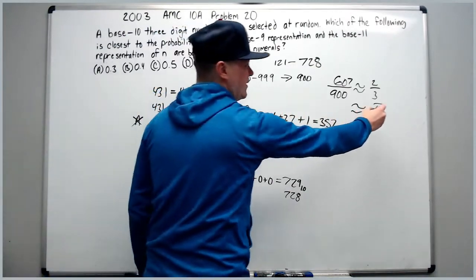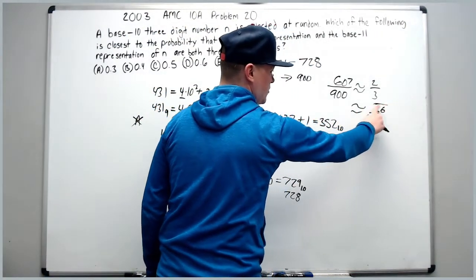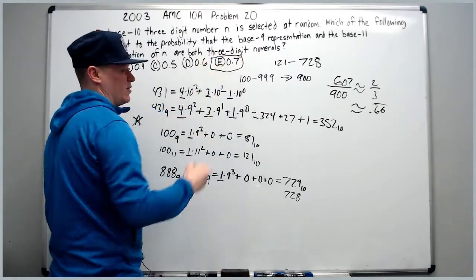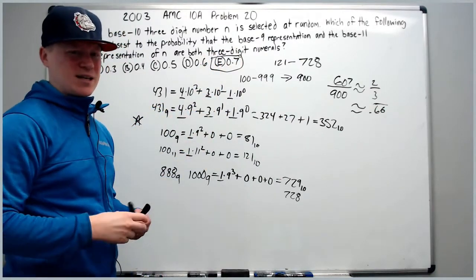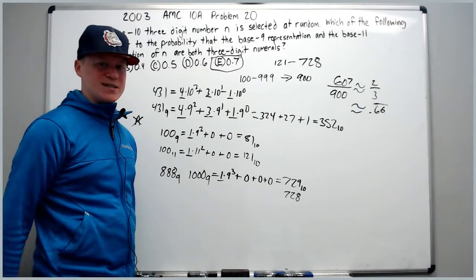So 0.6 repeating, the 6 will round up the other one to give you about 0.7. I hope this helps a little bit with the base representation questions.